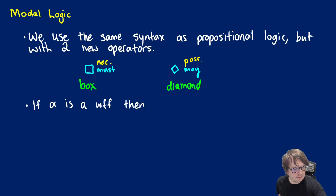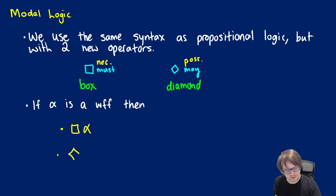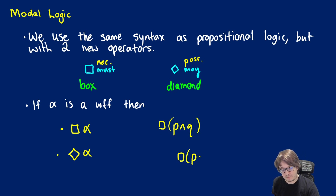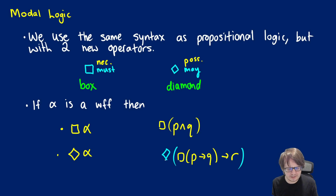Here's how we can use it. If we have some well-formed formula alpha, we can make a new formula called box-alpha, and if alpha is a formula we can make a new formula called diamond-alpha. For example, given P and Q we could put a box in front, or something fancier like if we had box-P arrow Q arrow R, we could create a new well-formed formula by encompassing that with a diamond — 'possibly, if necessarily if P then Q, then R.'